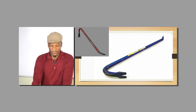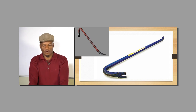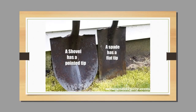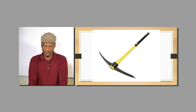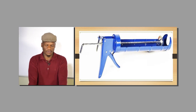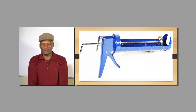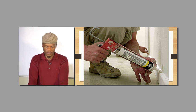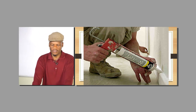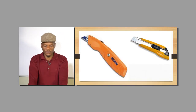Then you have got your crowbar, which is used to uplift heavy loads or remove nails from material. You have got your shovel or spade, used by builders mostly to mix concrete, mix mortar, or dig foundations for shallow foundations. Then you have got your caulking gun — you fit the silicone into it, squeeze the trigger, and the silicone comes out so you can seal materials.